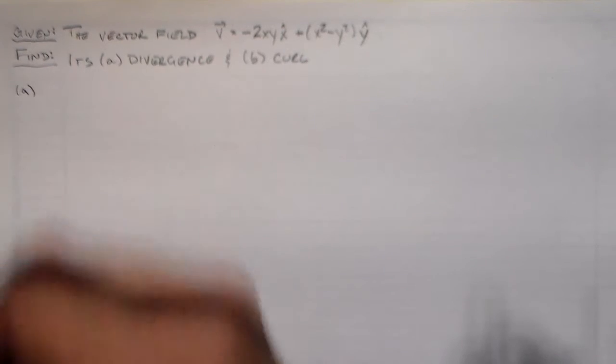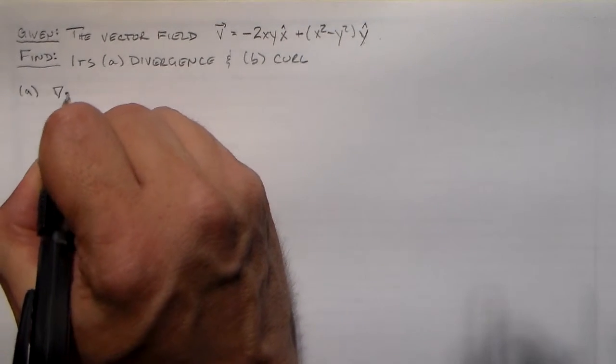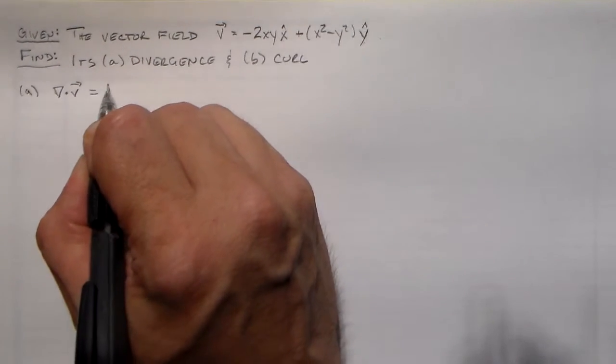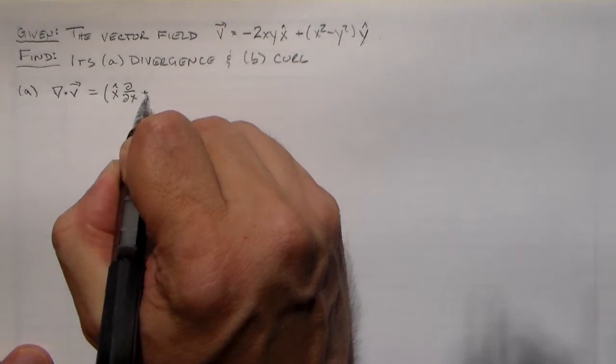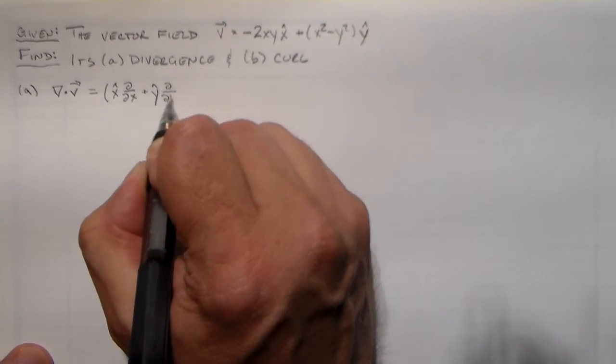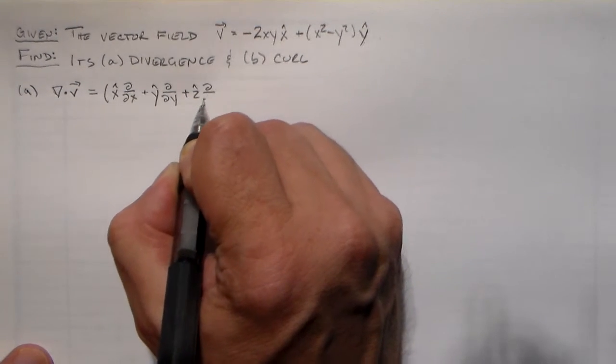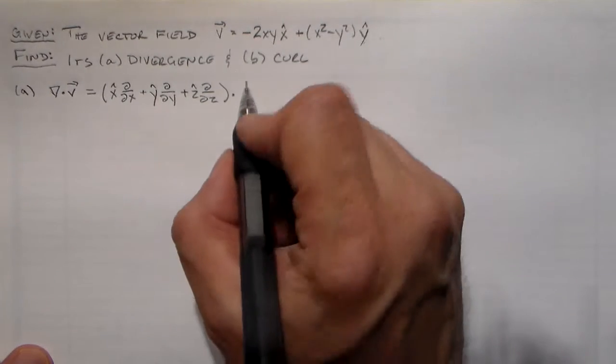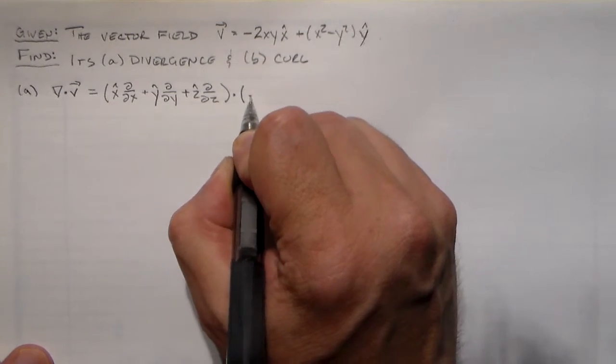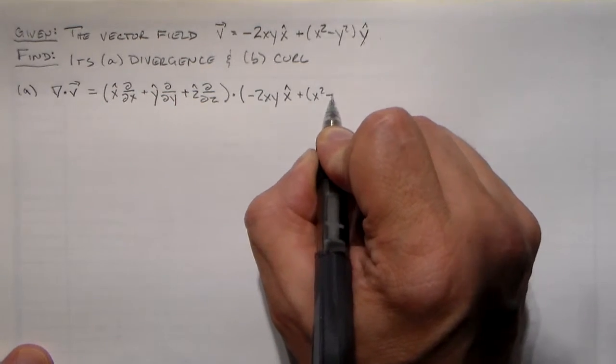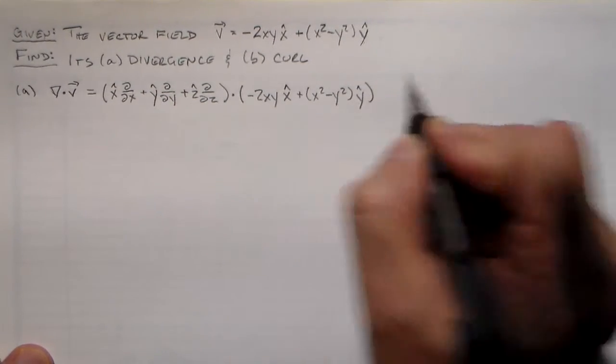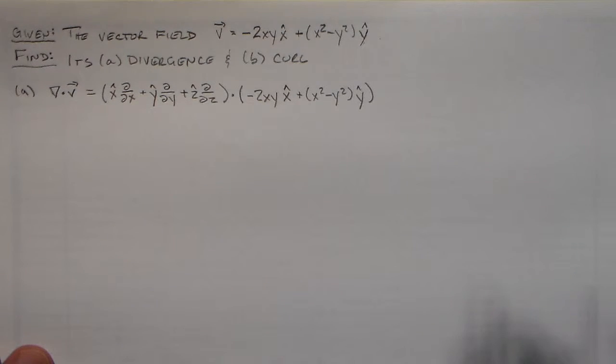So the divergence is a scalar, that comes about from taking del dot v, so it's a scalar derivative. And it basically shows whether or not there are scalar sources at some point. That's one way of thinking about it. It shows how much the field separates. If you're going to be taking electricity and magnetism, that's actually exactly what it is. It is going to tell you about scalar sources. If you're taking something that has to do with plasma dynamics, it might have something to do with compressibility of the gas and things like that. So there are some other interpretations depending on the actual physical situation.